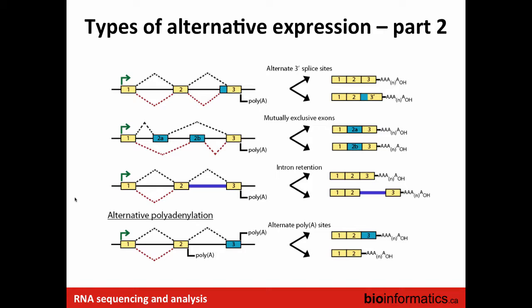Mutually exclusive exons give two transcripts with the same number of exons but using a different set in the middle. Complete intron retention generally happens with relatively small introns — including a large intron usually introduces a nonsense event leading to nonsense-mediated decay. At the three-prime end, alternative polyadenylation sites give transcripts with different ends.